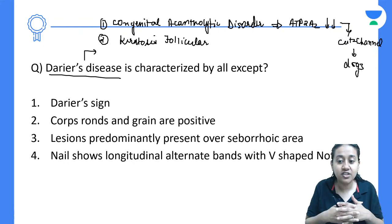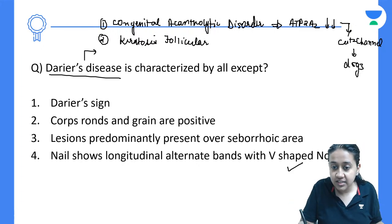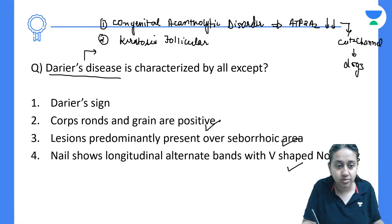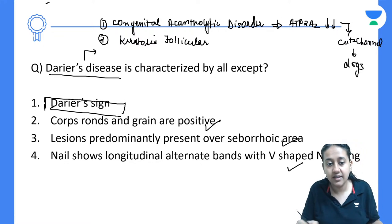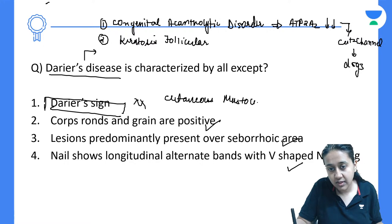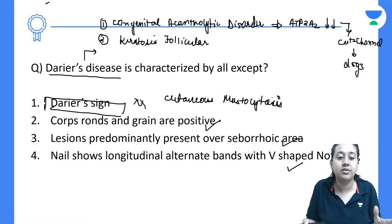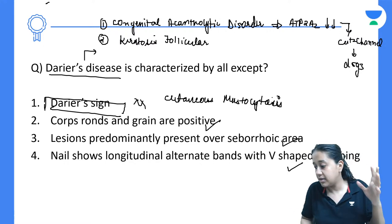Looking at the options: nail shows longitudinal alternate band — true; lesions predominantly on seborrheic areas — true; histopath shows corp ronde and grain — also true. The incorrect option is number 1: Darier's sign is not a feature of Darier's disease. It is a feature of cutaneous mastocytosis, specifically urticaria pigmentosa. So the correct answer is option number 1.